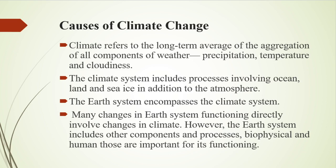Causes of climate change: Climate refers to the long-term average of the aggregation of all components of weather — precipitation, temperature, and cloudiness. The climate system includes processes involving ocean, land, and sea ice in addition to the atmosphere. The earth system encompasses the climate system, and many changes in earth system functioning directly involve changes in climate.